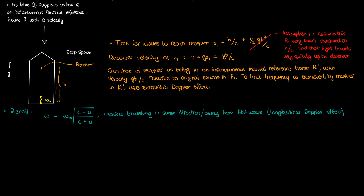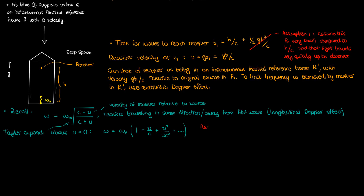My source started off at rest in the instantaneous reference frame R, and by the time the EM wave reaches the receiver, the receiver is moving away from the source at a relative velocity V, which in this case is gH over C. If I Taylor expand the square root term around V equals zero and assume that V is so small relative to C that higher power terms can be ignored, my equation for the Doppler effect simplifies. Plugging in V as gH over C gives me the frequency omega of the electromagnetic wave perceived by my receiver, who is above the source and accelerating upwards.